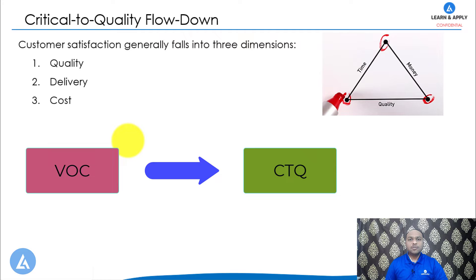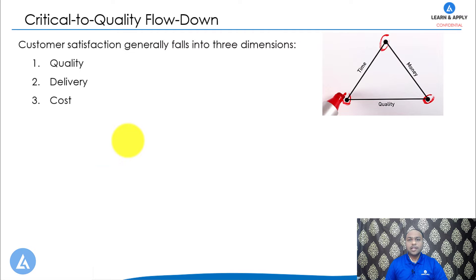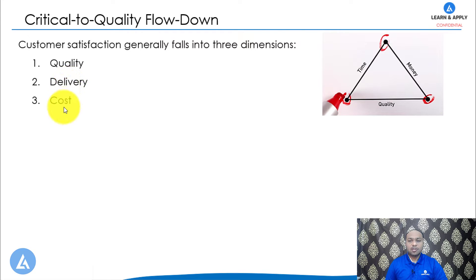CTQ is a very important concept which is used to capture the voice of customer as well as to ensure customer satisfaction. Customer satisfaction generally falls into three dimensions: the first one is quality, the second one is delivery (also called as time), and the third one is cost (also called as money). So these are the three important elements of the customer satisfaction triangle: quality, time, and money.